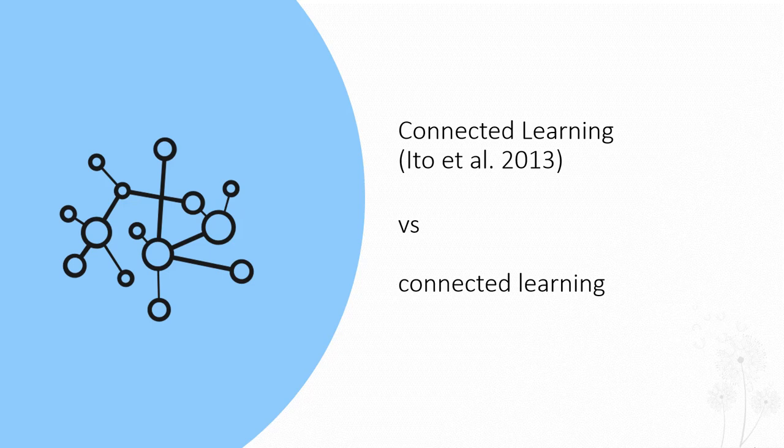This interpretation of connected learning explores how young people, and specifically marginalized youth, who have become disengaged from school and formal education, might access more meaningful and authentic learning opportunities.